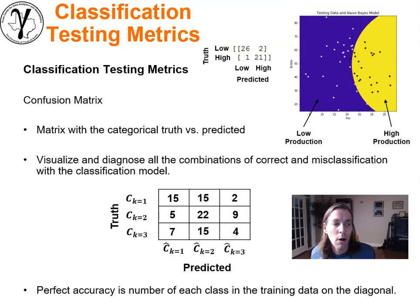Classification problems will have their own testing metrics to work with. Here's a couple of examples, and to demonstrate this I've drawn just a schematic here. Let's go through this confusion matrix, which is a nice complete measure. It's showing you the matrix with the categories that you're working with. We might have three different categories—one, two, three—of the truth versus the predicted.